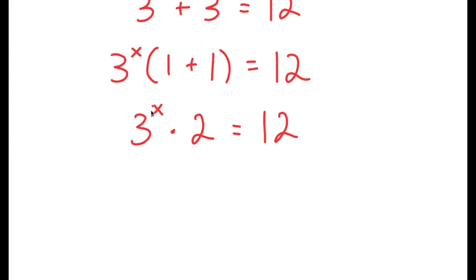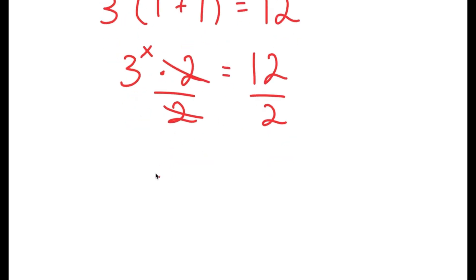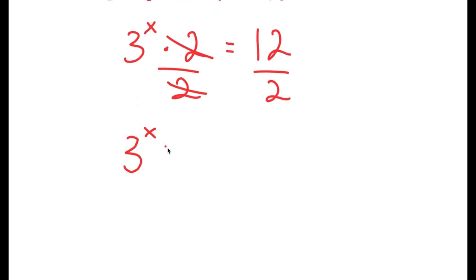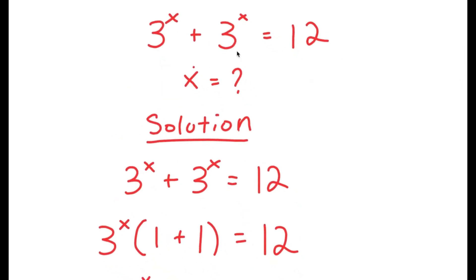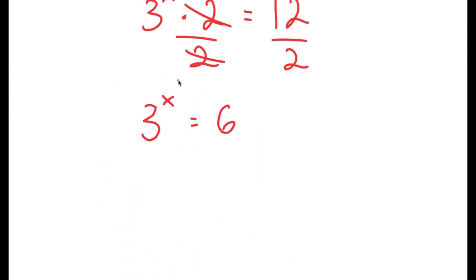From here, we want to isolate x. To do that, we have to get rid of this times 2 by dividing both sides by 2. So these two cancel out, and I'm left with 3 to the power of x is equal to 12 divided by 2, which is 6. So now I have a much more simplified equation: 3 to the power of x is equal to 6.